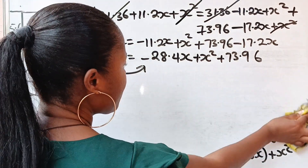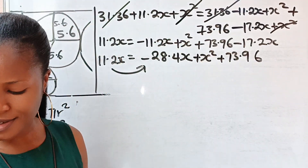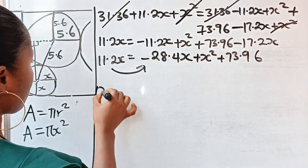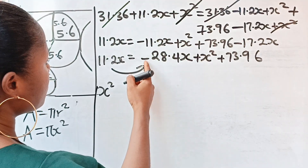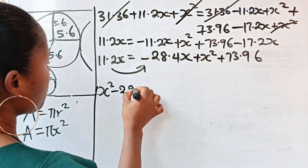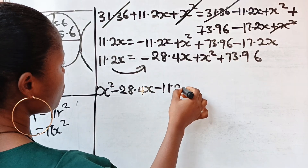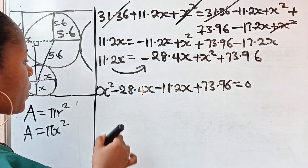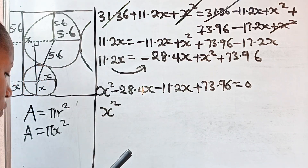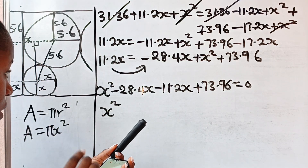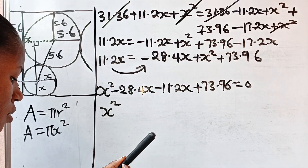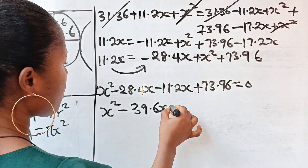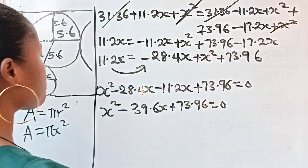I hope you are actually enjoying this video. If yes, please don't forget to give us a thumbs up. If we transfer the x terms to one side, we write x² first. We have −28.4x becoming −11.2x, giving us x² − 39.6x + 73.96 = 0.